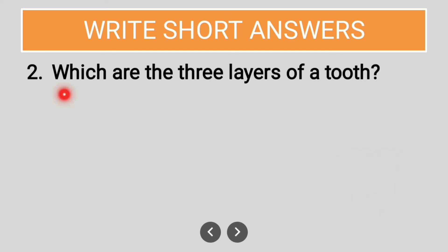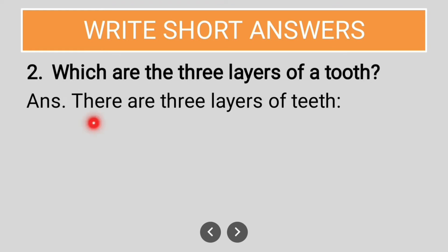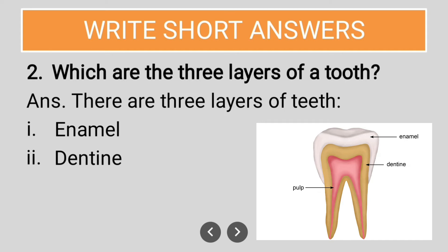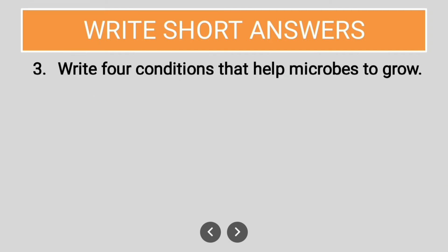The second short answer question: which are the three layers of a tooth? There are three layers of a tooth: enamel, dentine, and pulp.